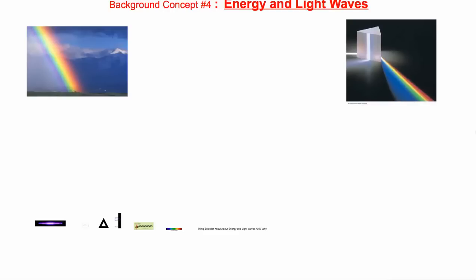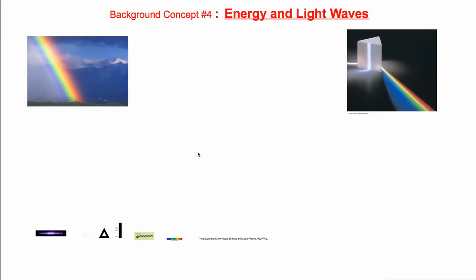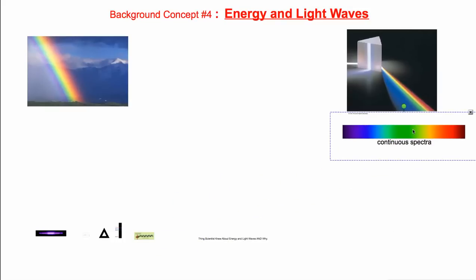The last background concept is waves and energy. An important thing to know is that when you take light from a light bulb or the sun and send it through a prism — or other similar devices — you can break it up into colors. Water in the atmosphere does the same thing and that's what makes a rainbow. If we projected this on a wall, we might see something called the continuous spectrum.